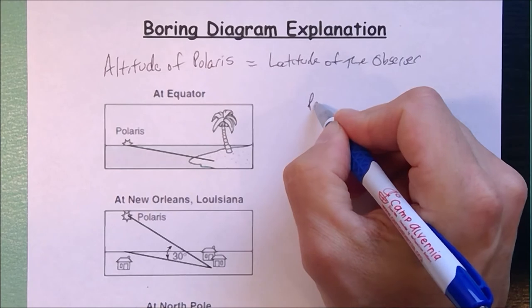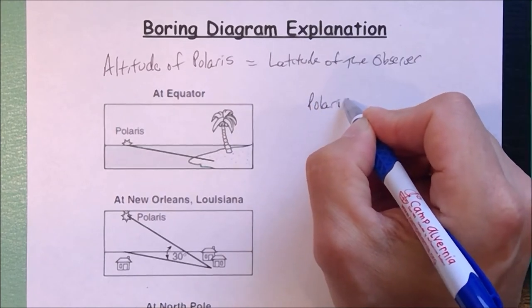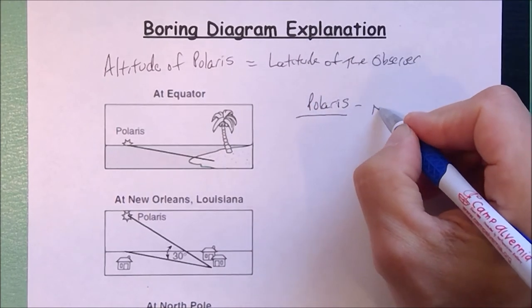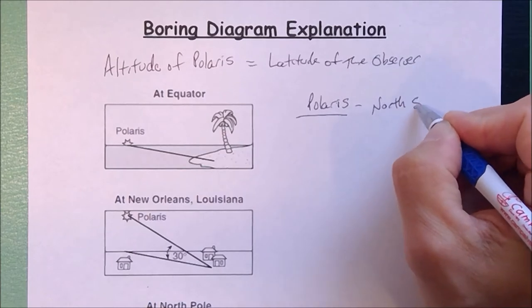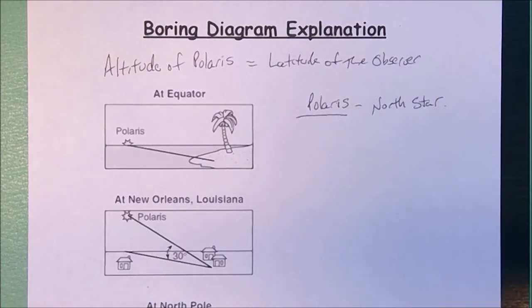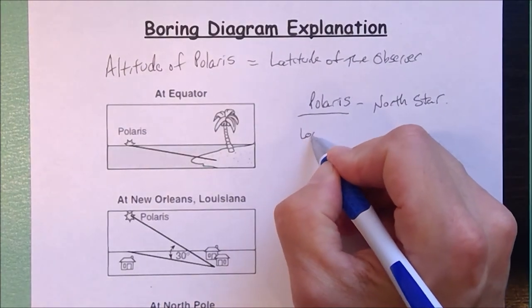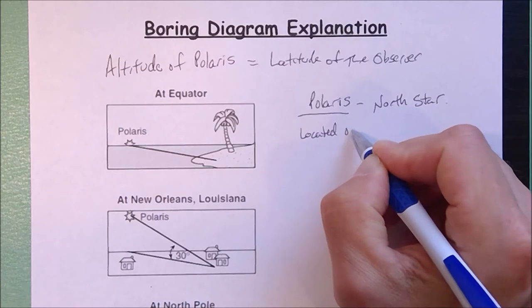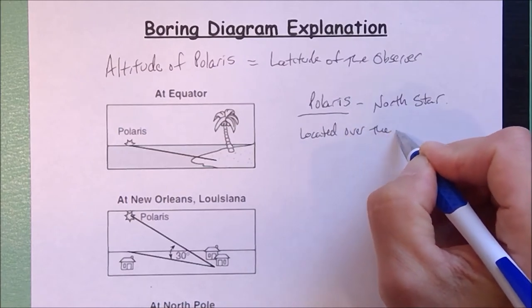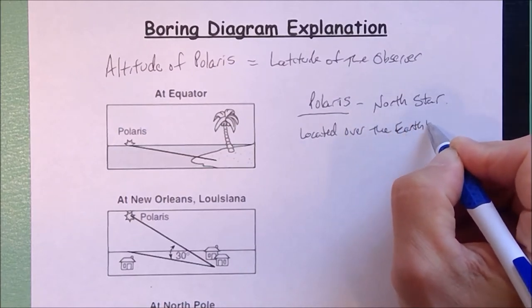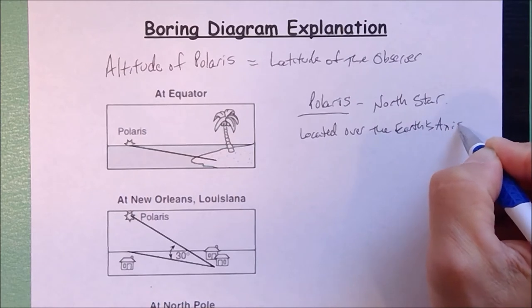Now information that you should know about Polaris: Polaris is definitely known as the North Star. It's not the biggest star. It's not the brightest star. What is special about Polaris is that it is located over the Earth's axis of rotation.